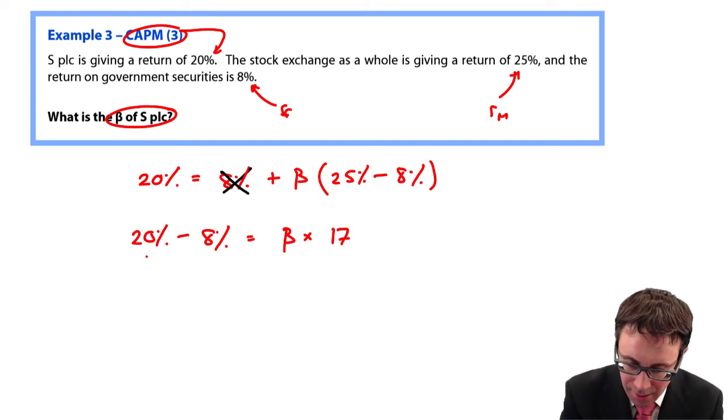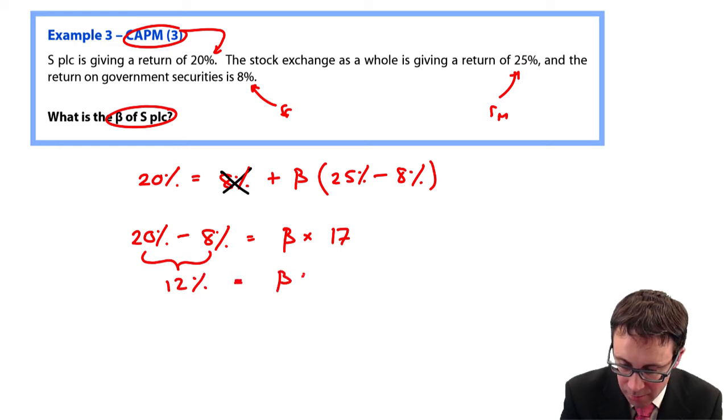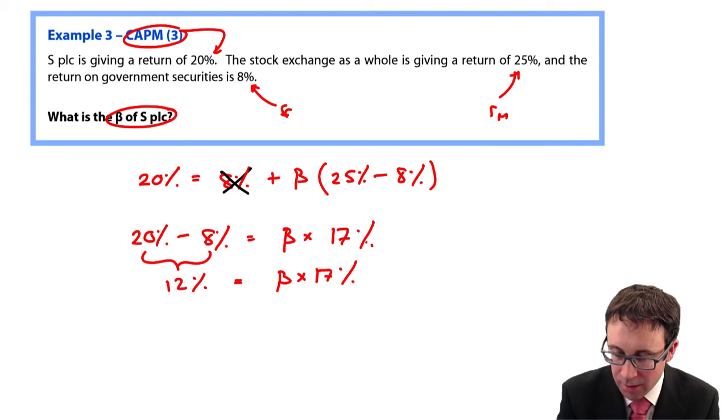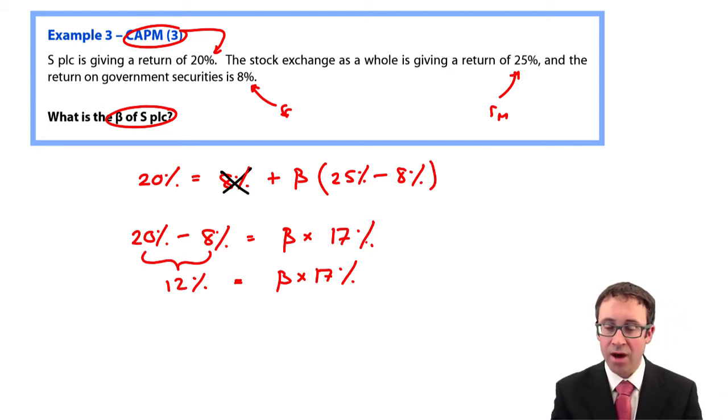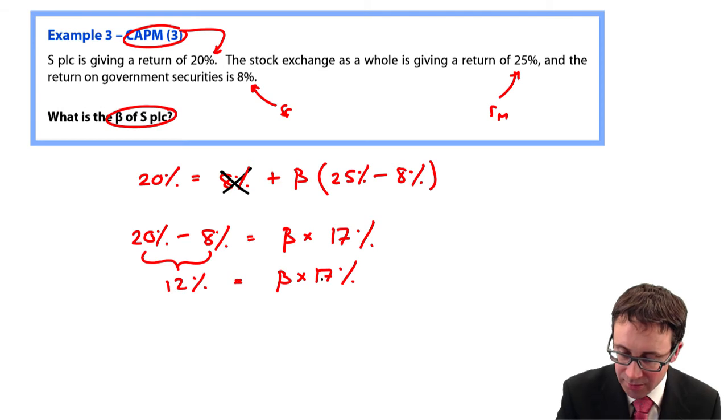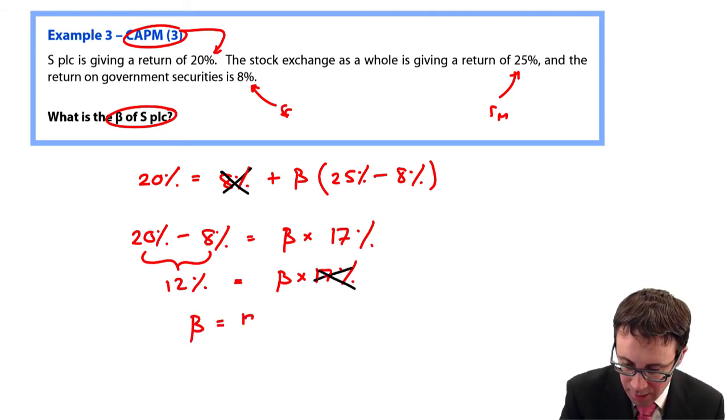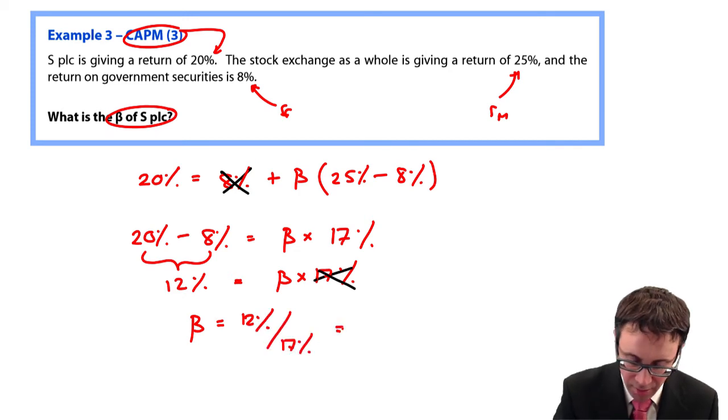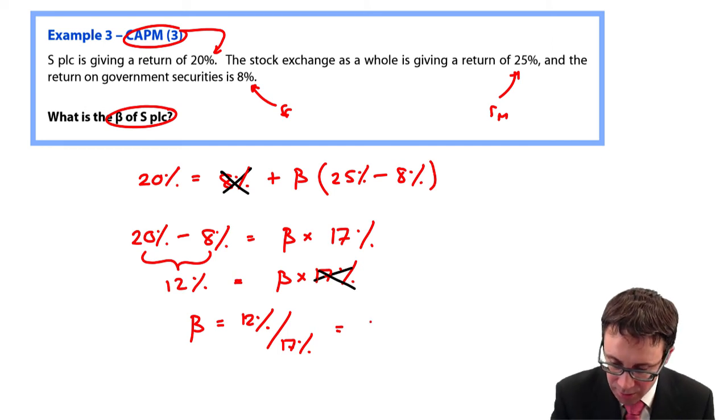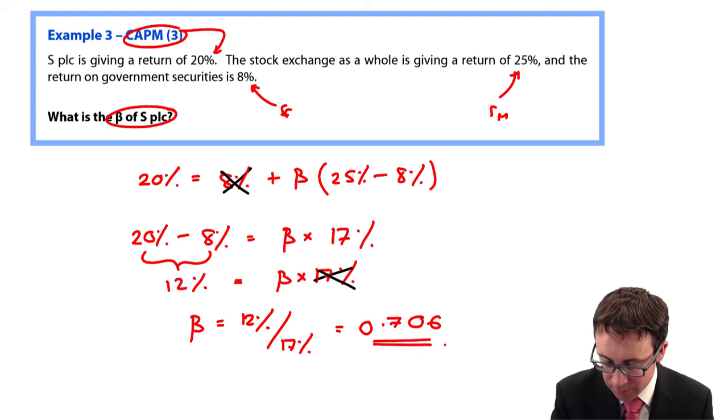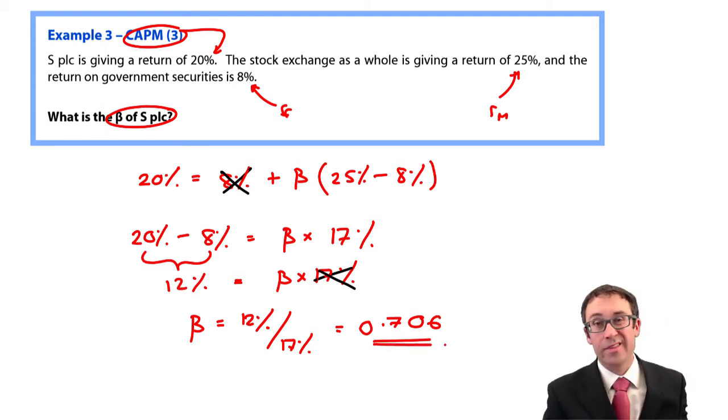And then we have 12% is equal to beta multiplied by 25 less 8. That's 17. That's then equal to 12% equals beta multiplied by 17%. So if we divide both sides by 17, the 17 is cancelled there. And beta is 12% divided by 17%, which is there as 0.706. It's as simple as that.